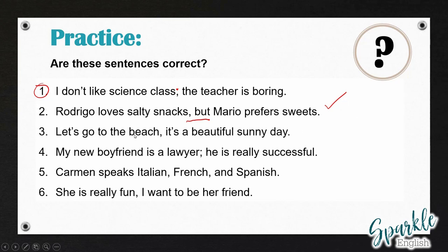Number three: 'Let's go to the beach, it's a beautiful sunny day' — this is a comma splice. Both are independent clauses, and the comma is not strong enough to connect them. We need to change this to a semicolon because these sentences are closely related, or we could turn this into two sentences. Number four: 'My new boyfriend is a lawyer; he is really successful' — this is not a comma splice. We have correctly used a semicolon to connect two closely related sentences, so that is already correct.